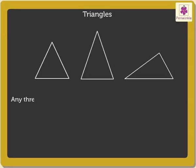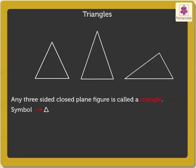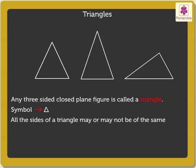Any three-sided closed plane figure is called a triangle. A triangle is symbolically written as shown. All the sides of a triangle may or may not be of the same length.